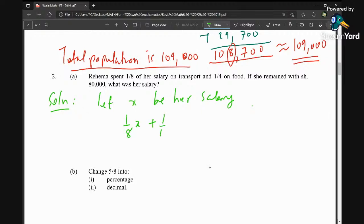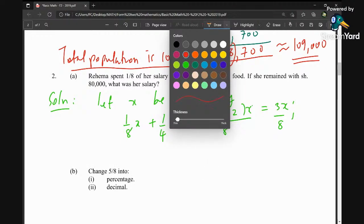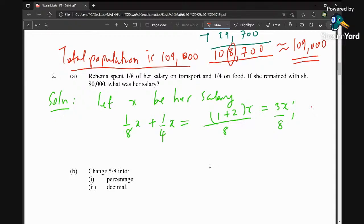She spent one over eight of her salary on transport and one over four of her salary on food. The total expenditure here will be (1/8 + 2/8), we get 3x over 8. The remainder after expenditure equals x minus 3x over 8, which is 8x minus 3x equals 5x over 8.